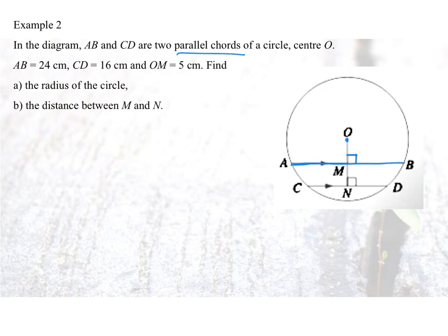AB is originally 24cm. So now if I have ON to be perpendicular, that means AB will be cut into two equal halves. And there will be a length of 12cm on each side.